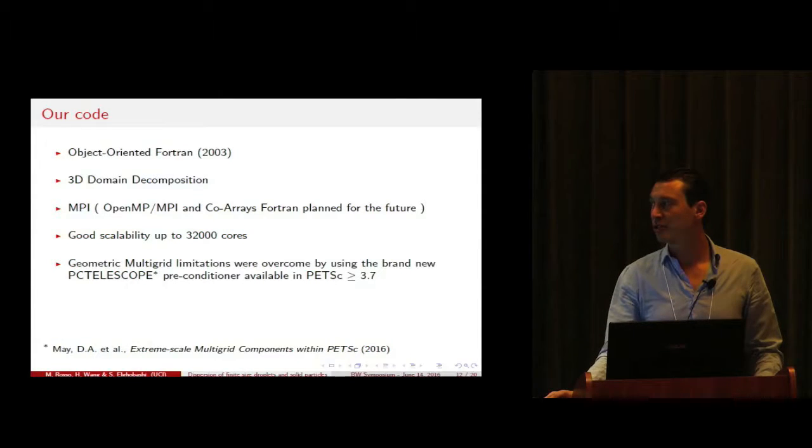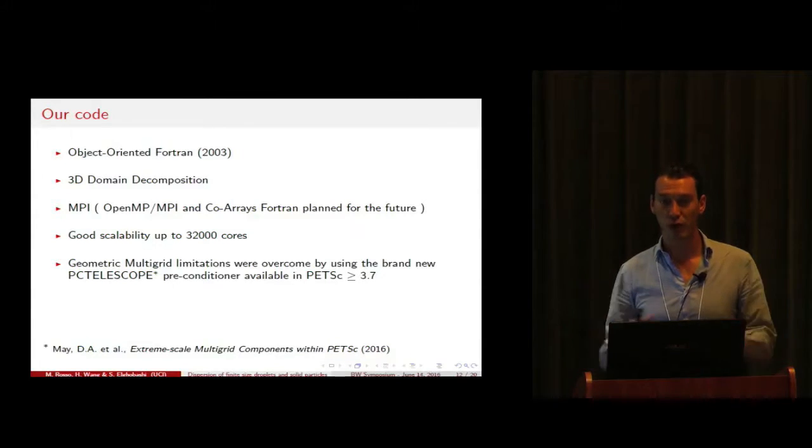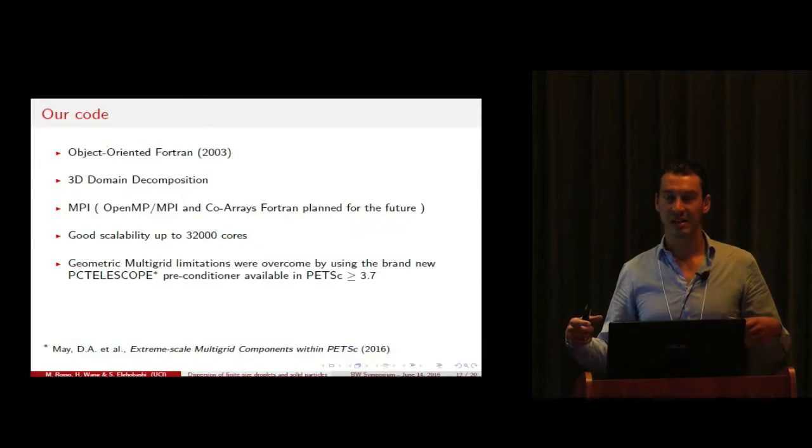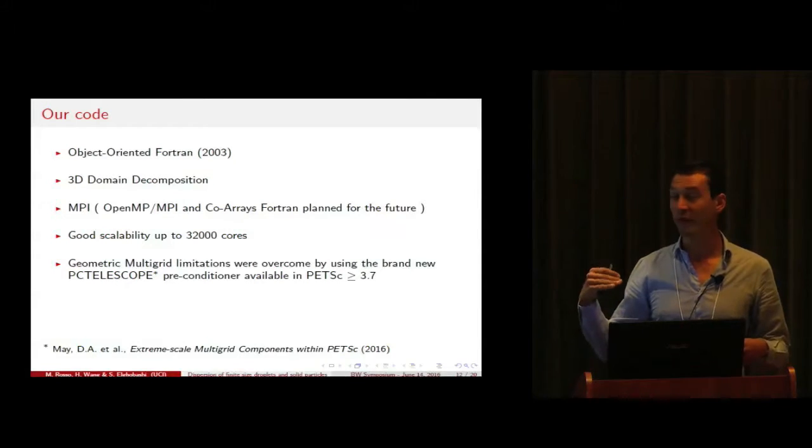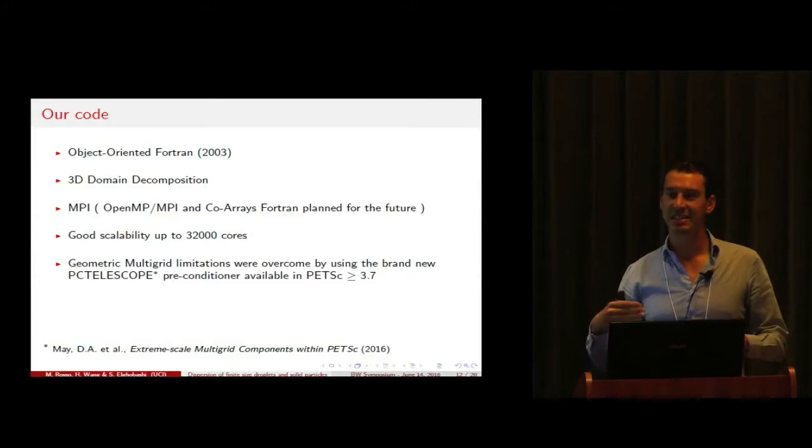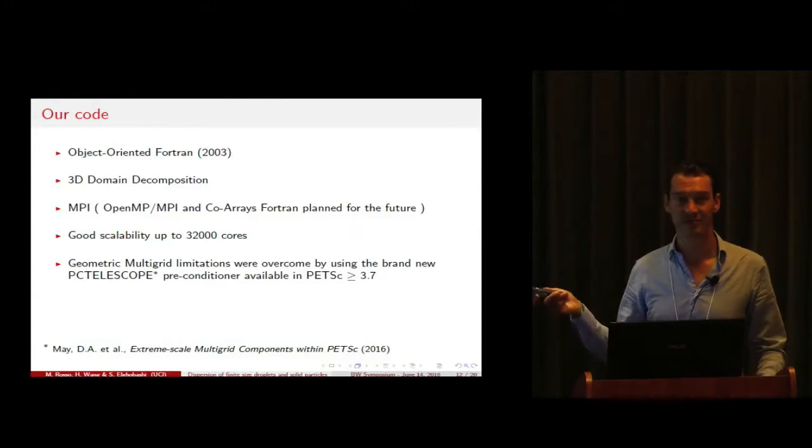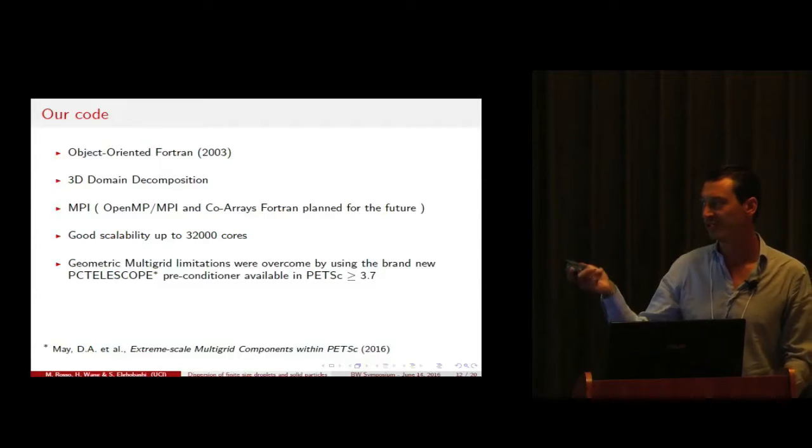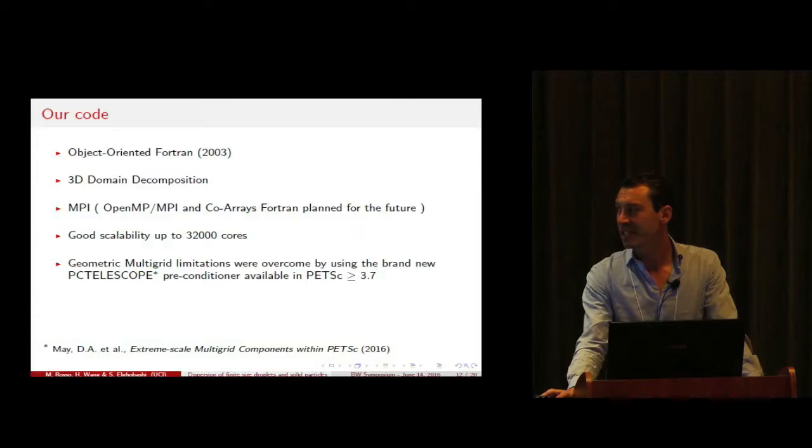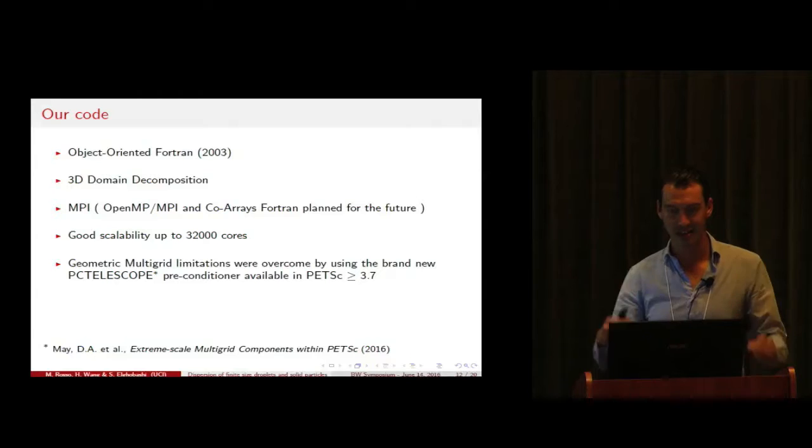The geometric multigrid requires a certain amount of local grid points given a certain number of levels. The more levels you use, the faster the solution is, but this doesn't go well with a very large number of processors. We overcame this difficulty by using a brand new preconditioner available in PETSc starting from version 3.7 called PC telescope, developed by Dave May. We helped test it, and this circumvents the problem of the locality of the geometric multigrid.